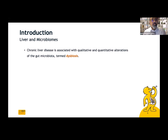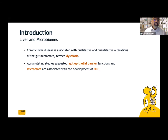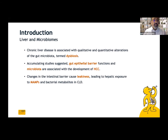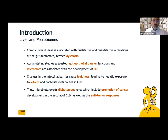Chronic liver disease is associated with qualitative and quantitative alterations of the gut microbiota — this is dysbiosis. We have accumulating evidence that gut epithelial barrier functions and microbiota are associated with the development of hepatocellular carcinoma. Changes in the intestinal barrier cause leakiness — leading to hepatic exposure to MAMPs and bacterial metabolites in chronic liver disease. Thus, microbiota exerts dichotomous roles, which include promotion of cancer development in the setting of chronic liver disease, as well as anti-tumor responses.